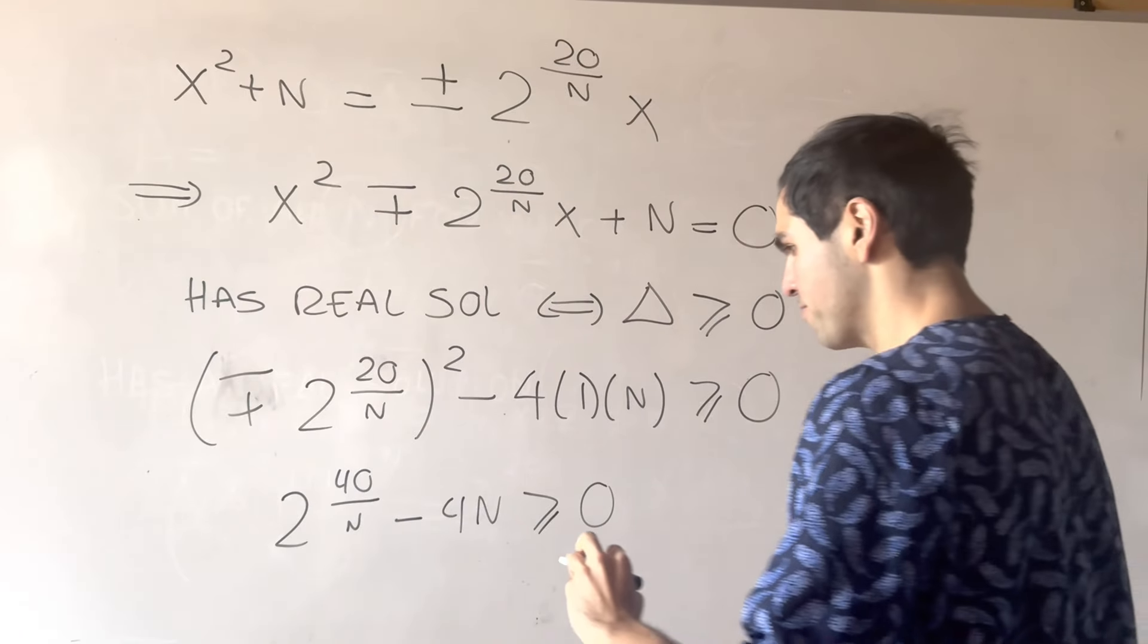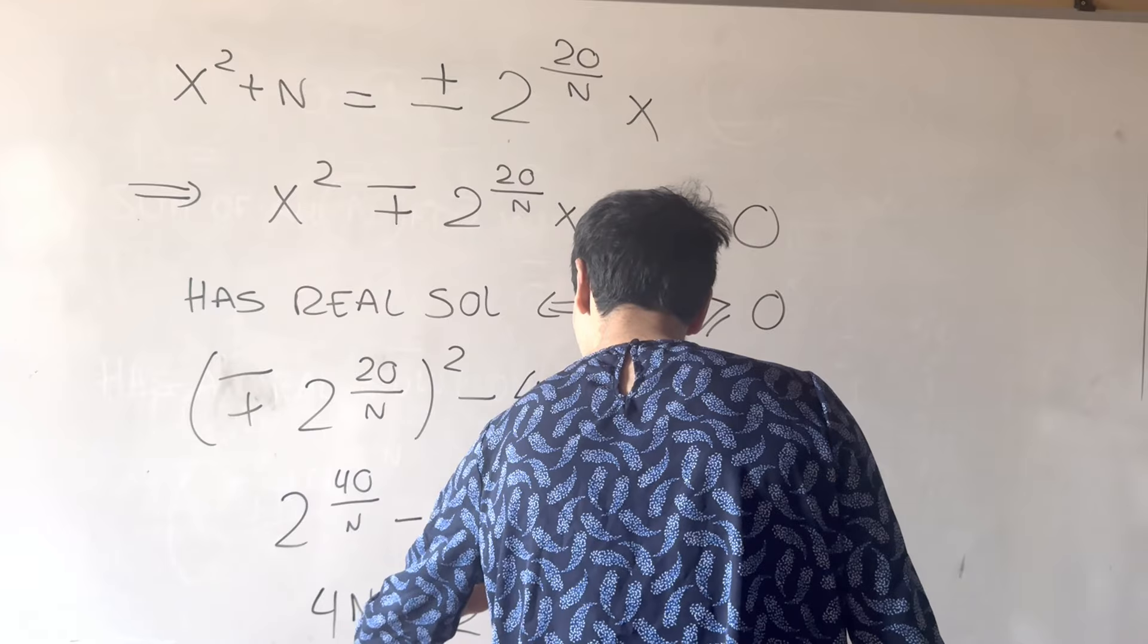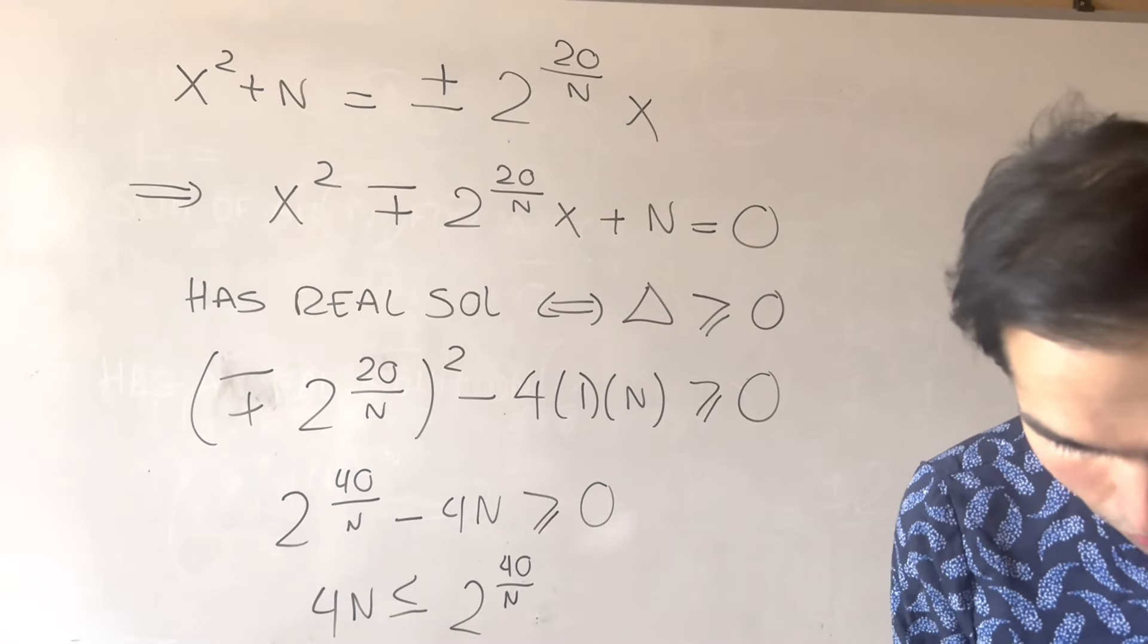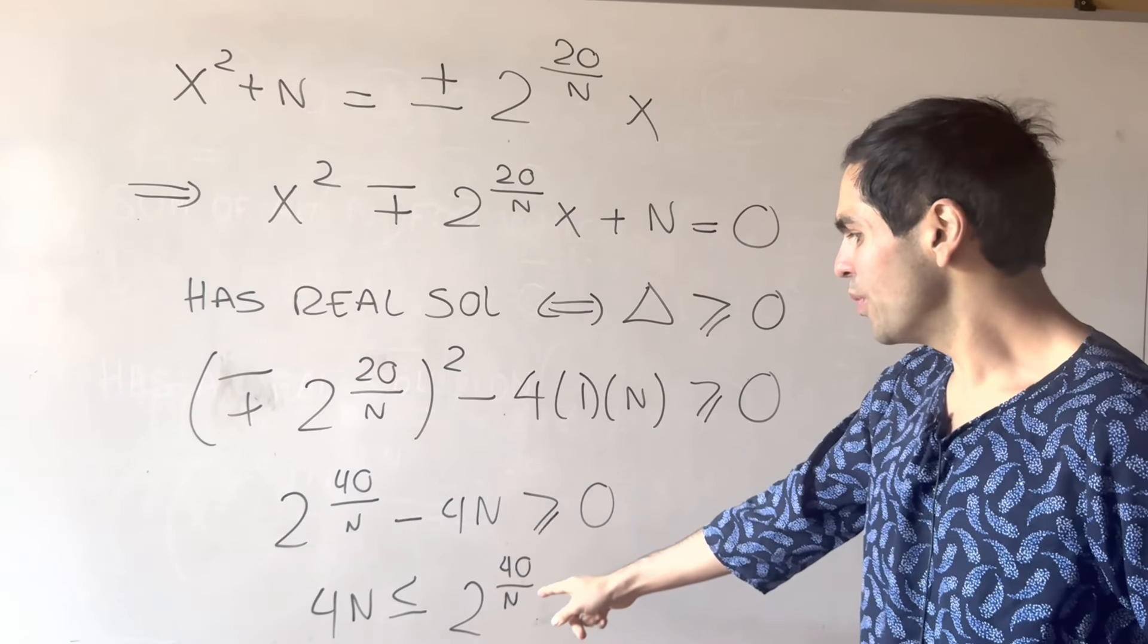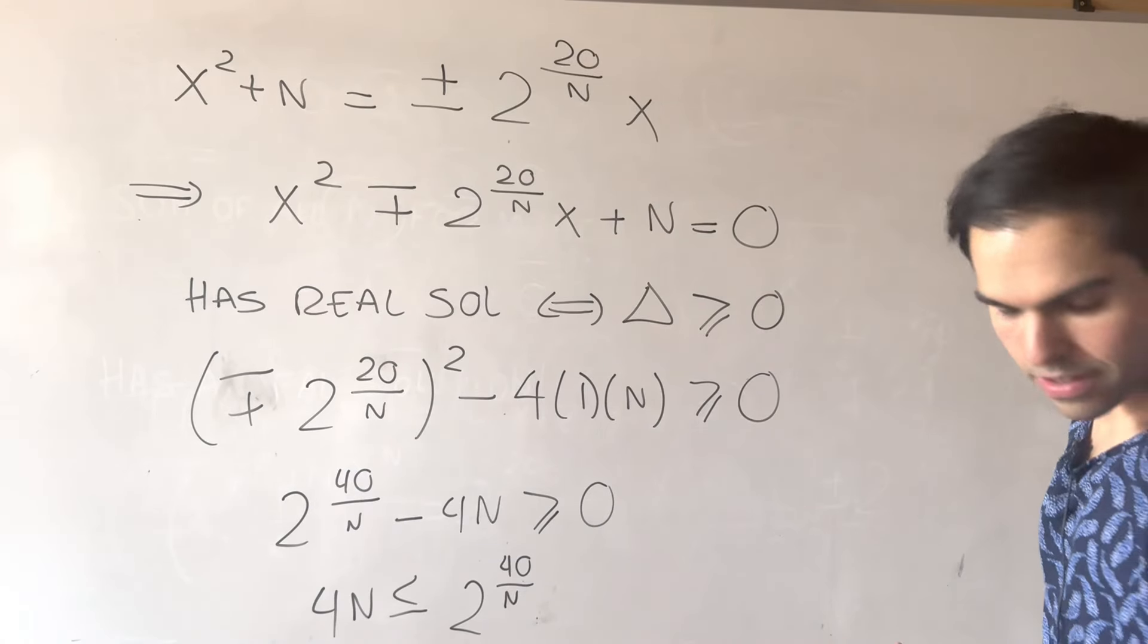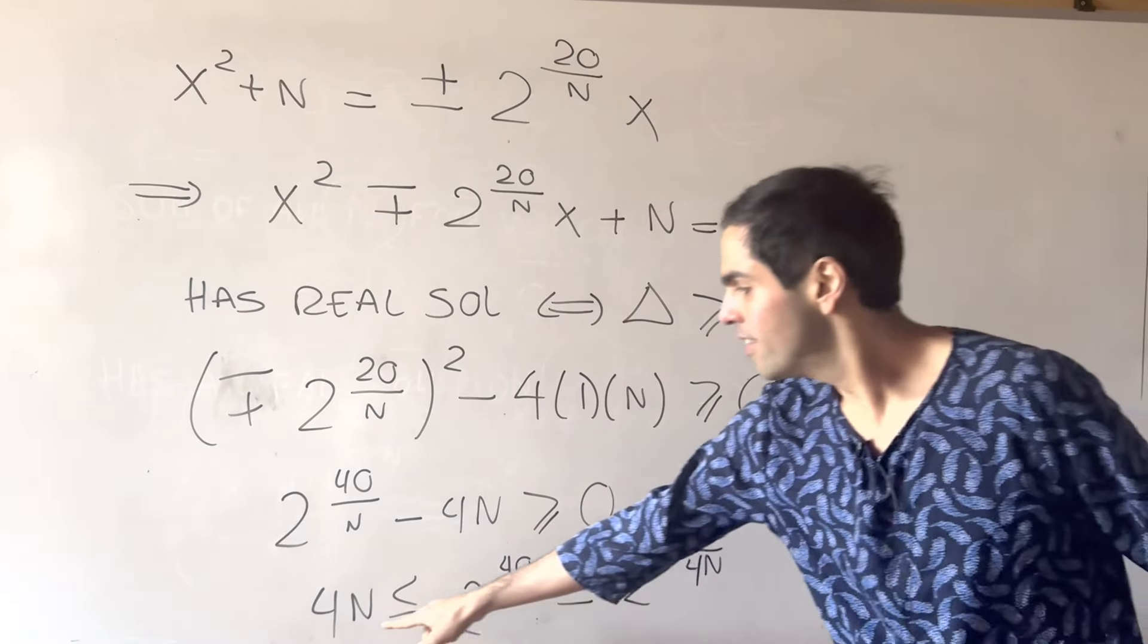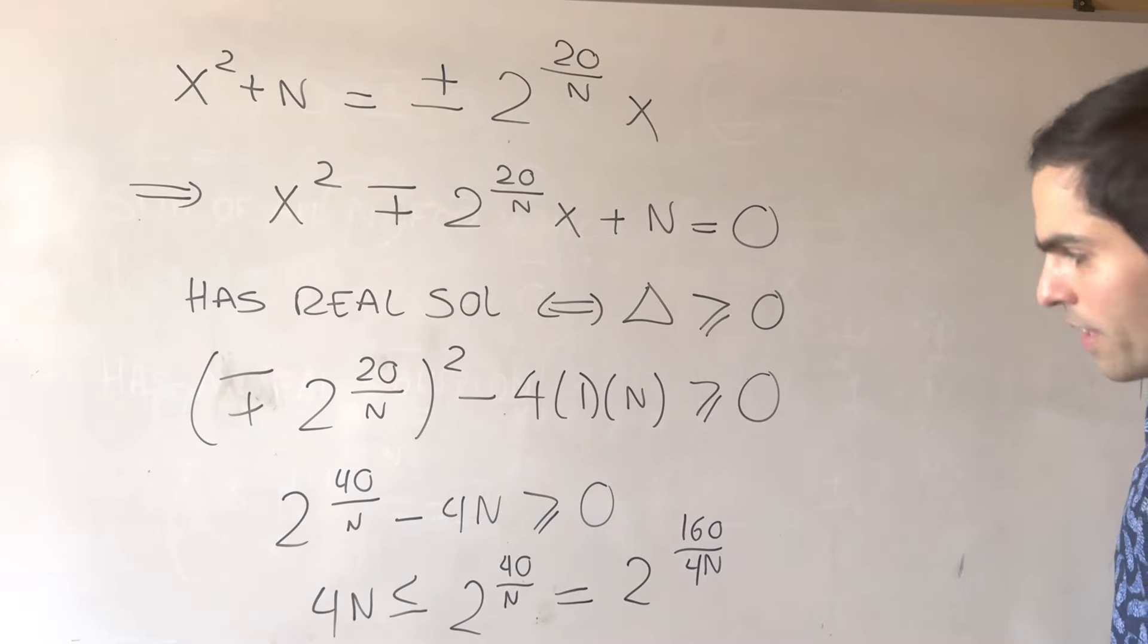And therefore, 4n is less than or equal to 2^(40/n). Now, it looks like it's an equation that's sort of impossible to solve. But it turns out it's not because here's a cool trick. So, 2^40 is 2^160 over 4.